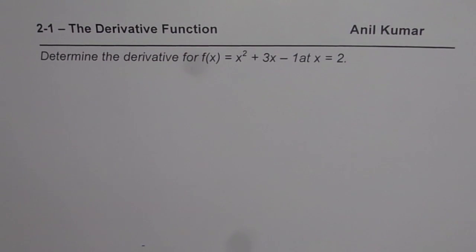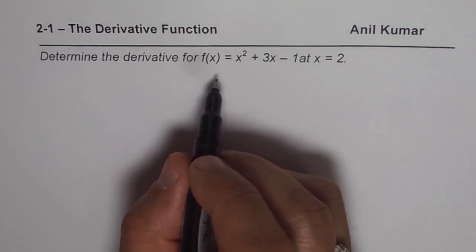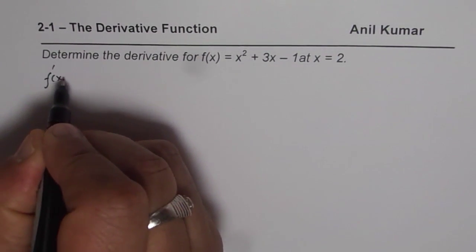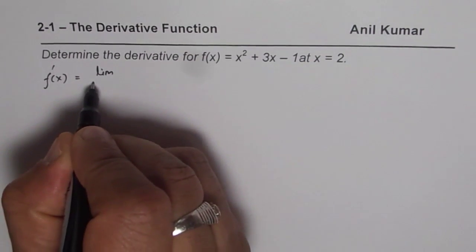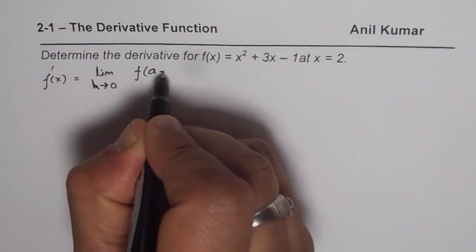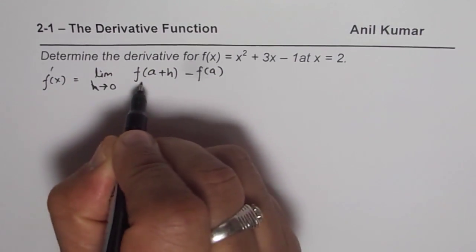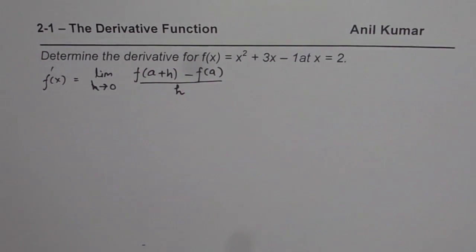I am Anil Kumar and with this example we will discuss how to find the derivative of a function at a given point. As you know, the derivative at any given point on the function is given by, we write normally as f dash x equals to limit when h approaches 0. We will use this definition, f of a plus h, a is that point, minus f of a over h. So that is how we find derivative at any specific point.